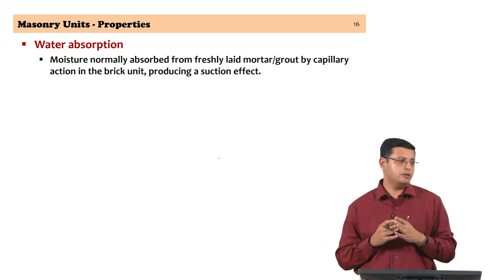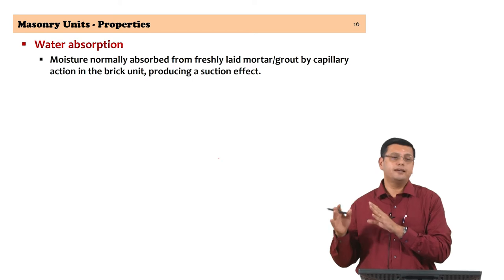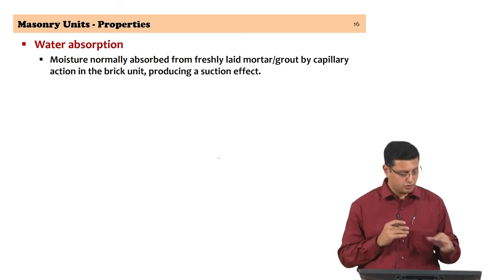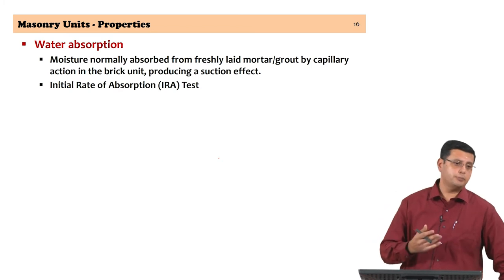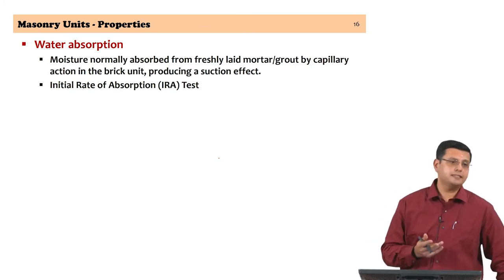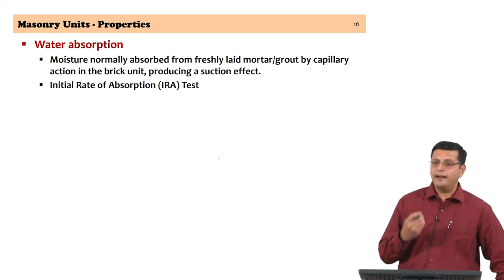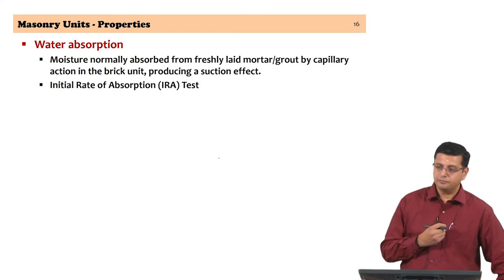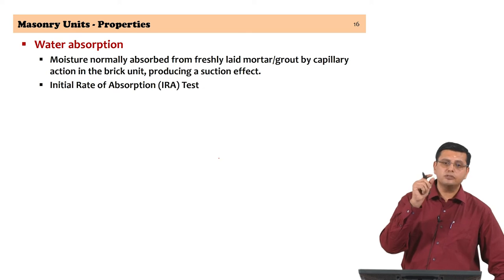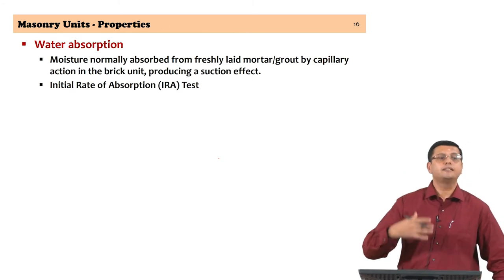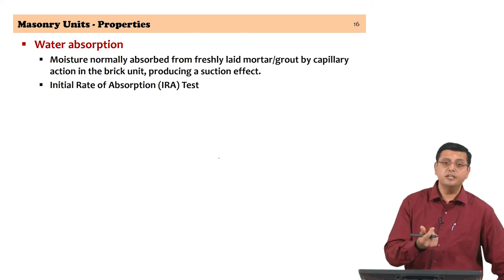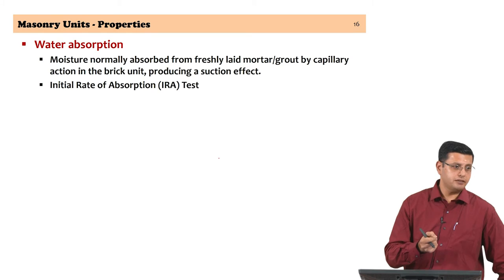If water is taken away from mortar, it interferes with the cement hydration process. One of the tests carried out to evaluate water absorption is the Initial Rate of Absorption (IRA) test. This is very important because in the first few minutes, the most critical water available in the mortar is taken away. If that water is not available for the mortar in the initial few minutes when bond is being established, you will have a problem of bond.